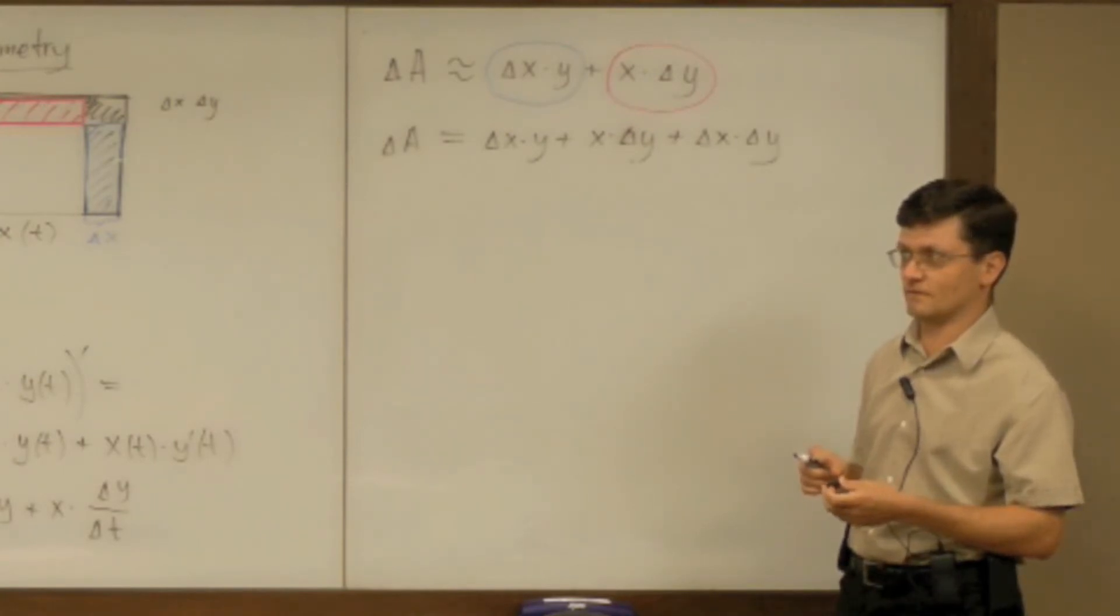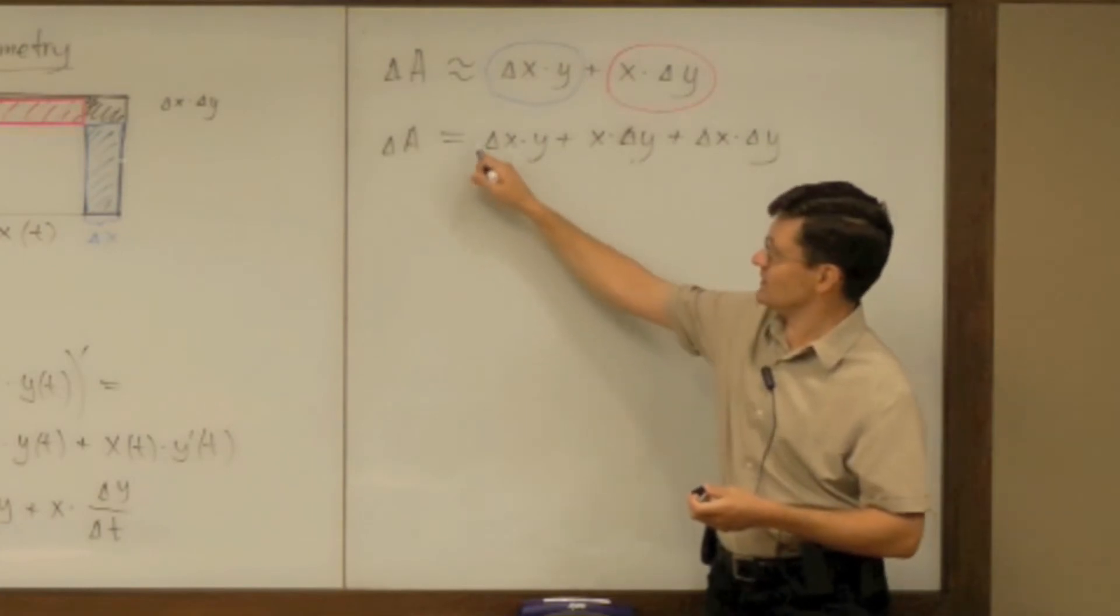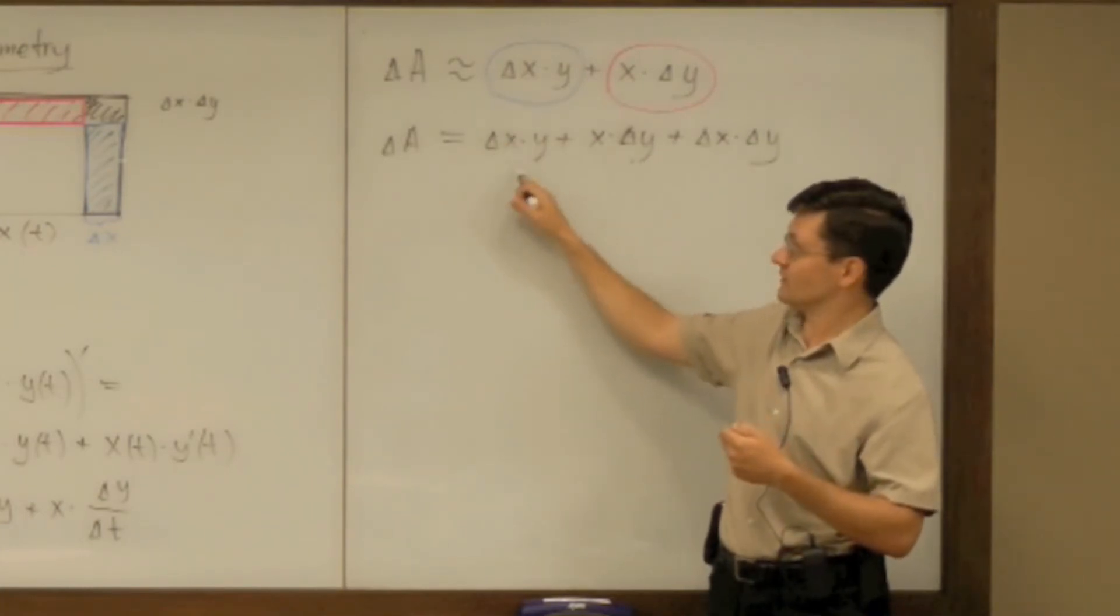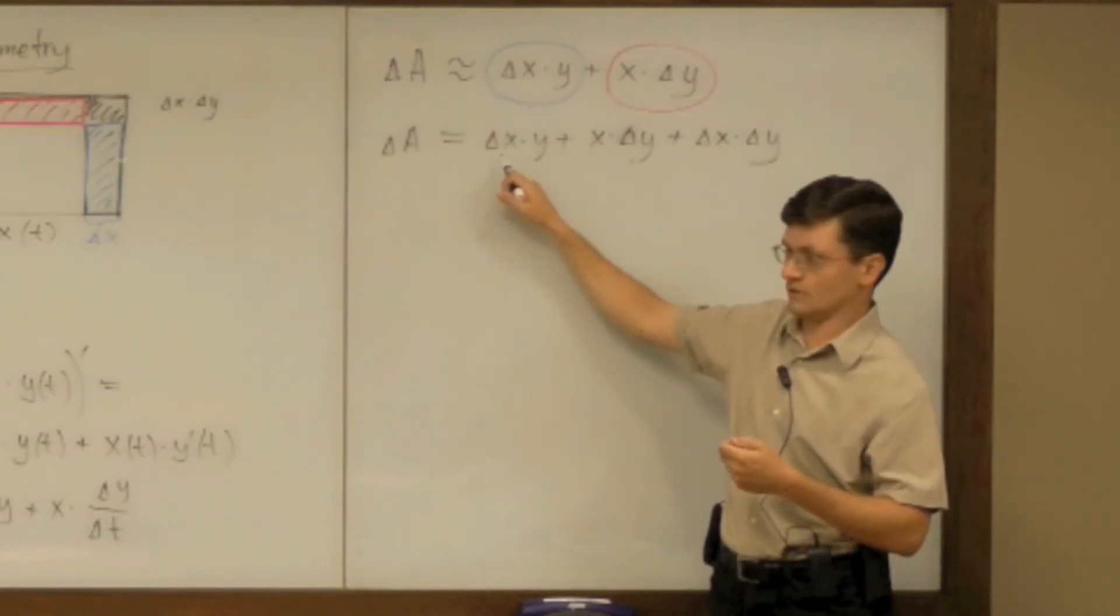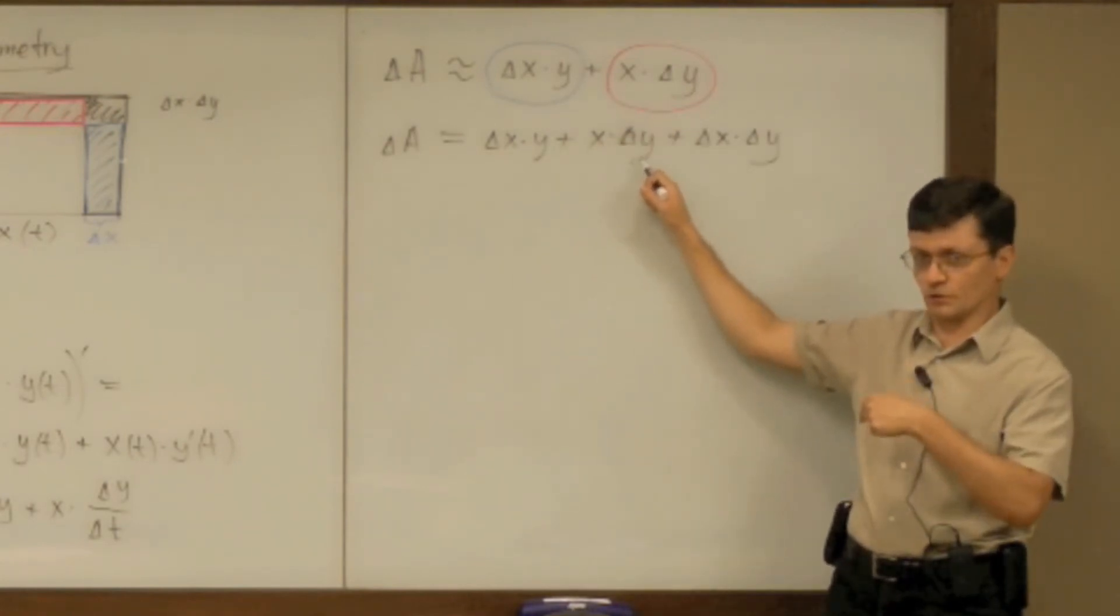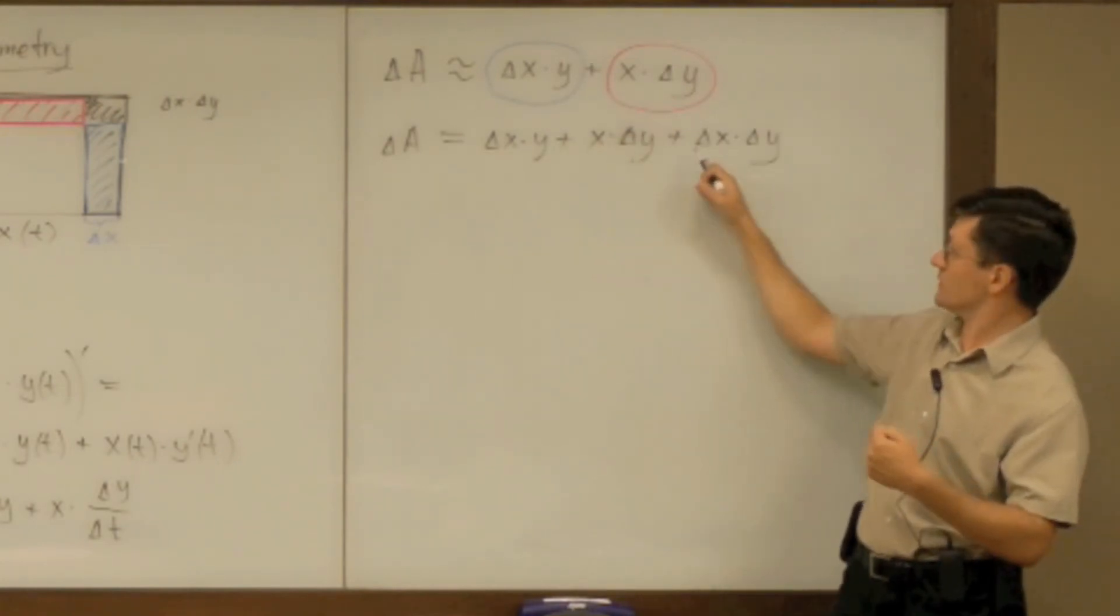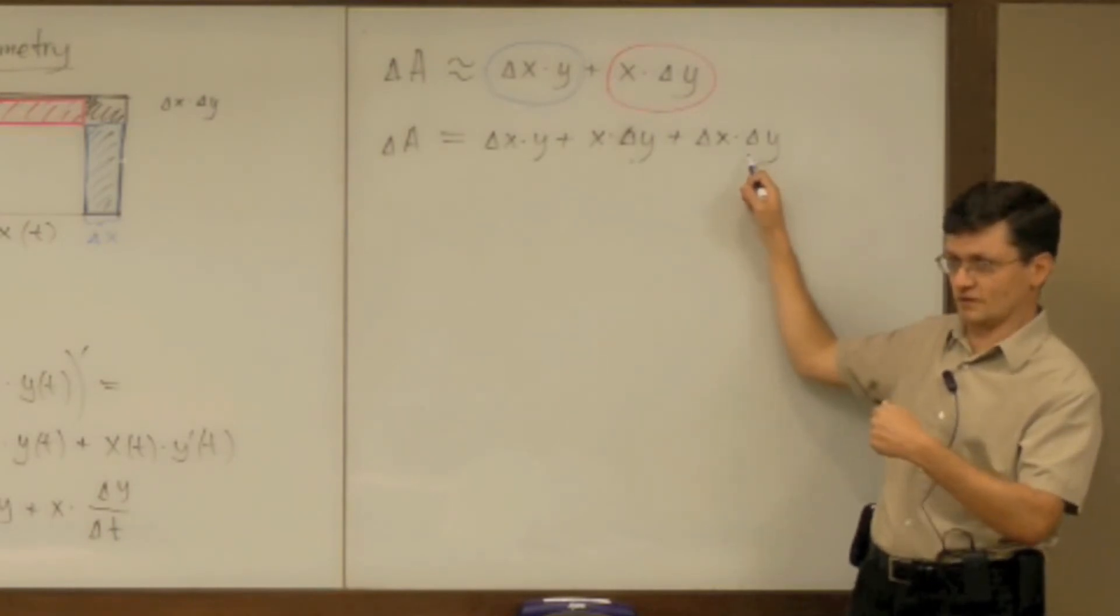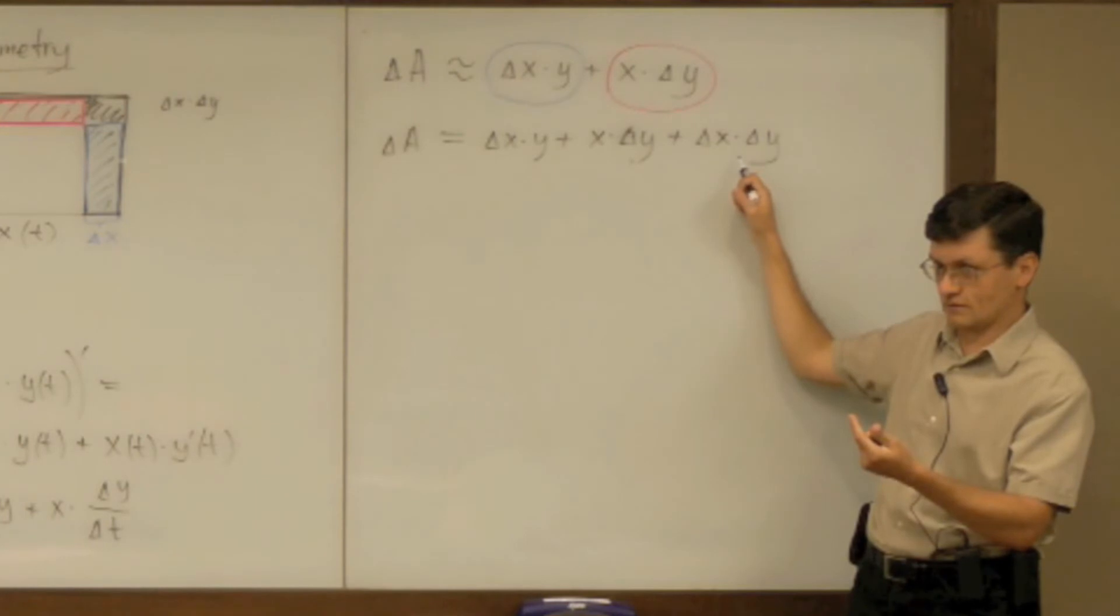So you can say that all right so now you see linear dependence on delta x here. So this term depends on delta x linearly and doesn't depend on delta y. That term depends linearly on delta y but not on delta x. And this term depends on delta x linearly, on delta y linearly, but on delta t it depends in a quadratic way.